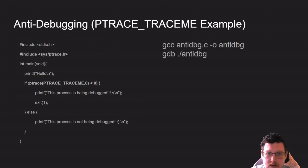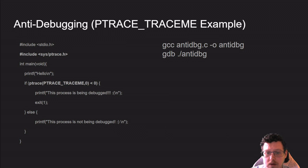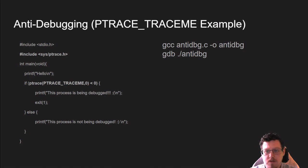Even though you can include this check to detect tracing, it's actually bypassable. If you have the binary, you can patch it to remove the condition and make it always return false. You can edit the jumps in the assembly to make it always go to the non-debugged condition. So there are ways of bypassing things that are in the binary.